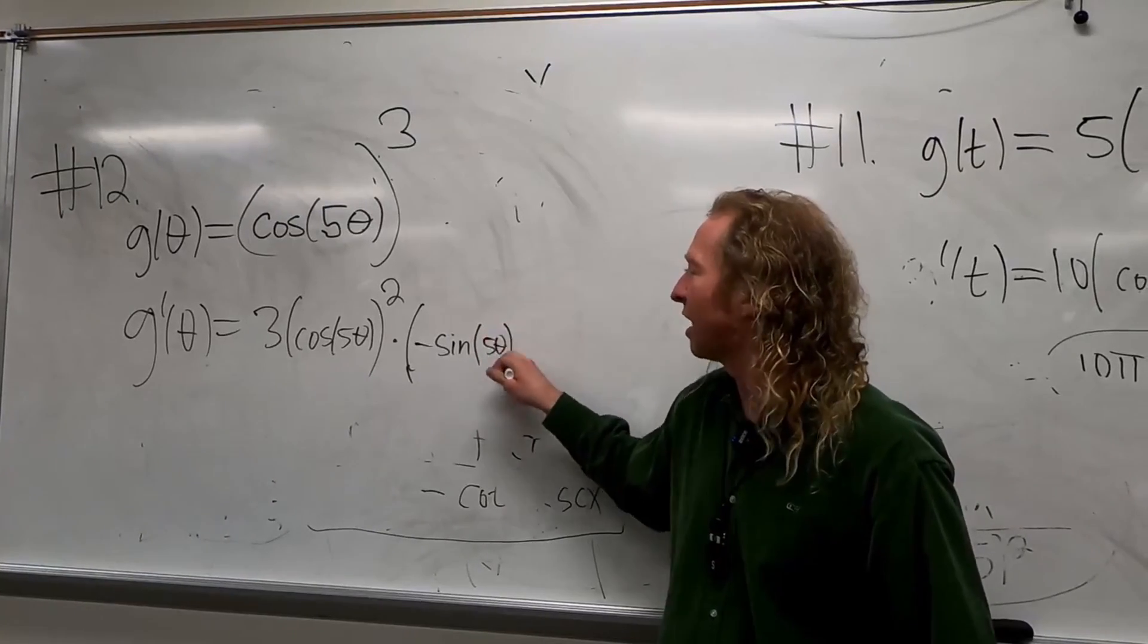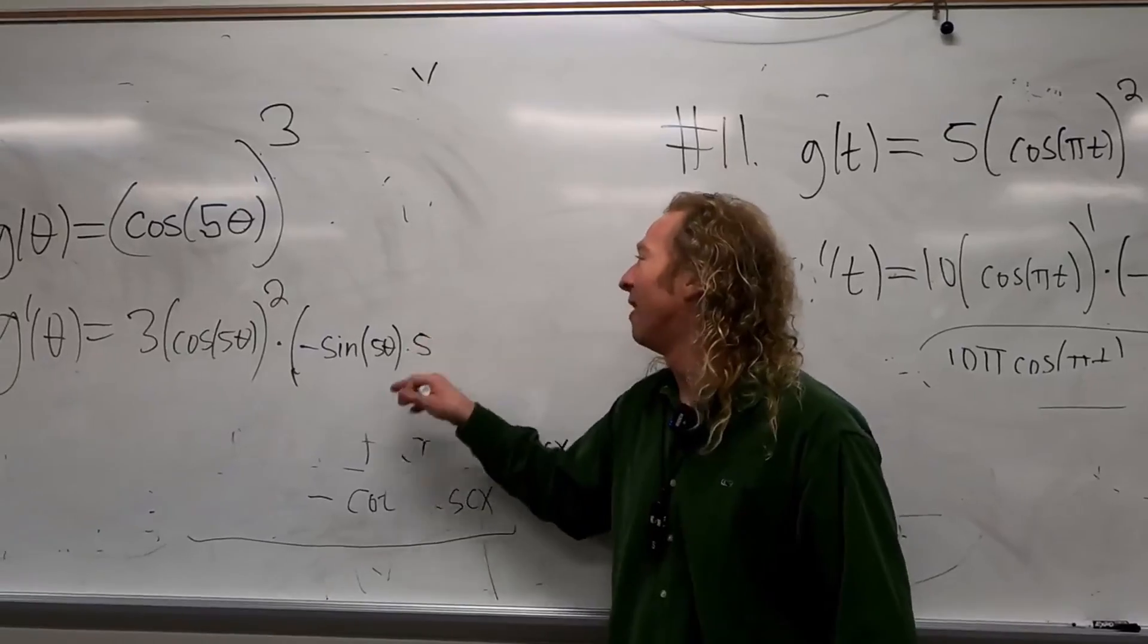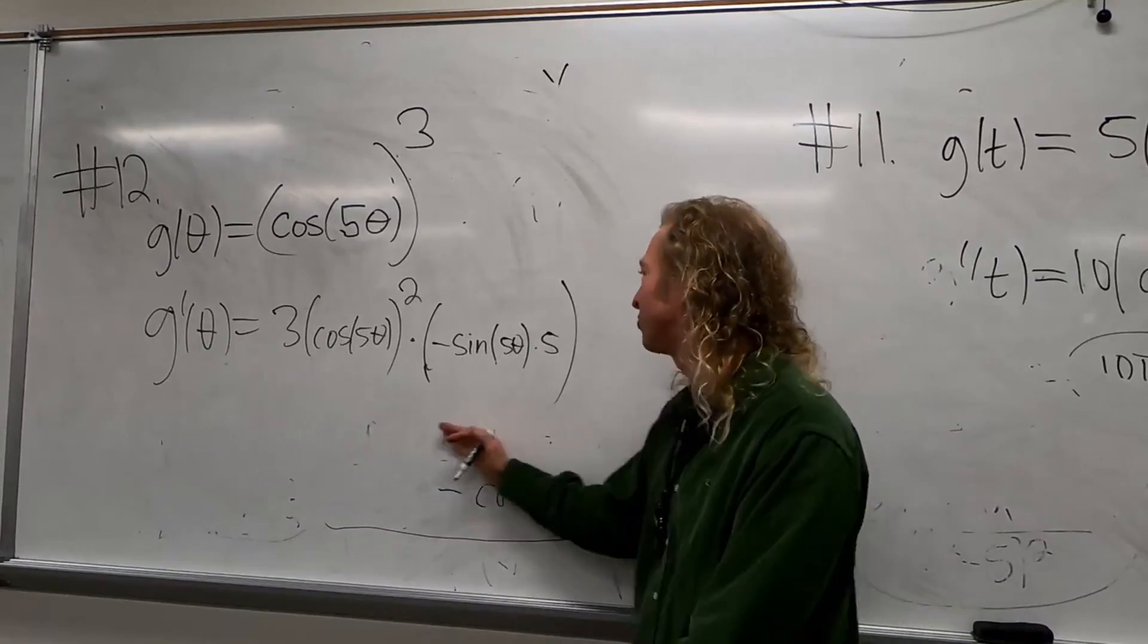So five theta times what? Five. There's my ugly five. Yeah, times five. Because that's the chain rule, right? The derivative of the inside. Beautiful stuff.